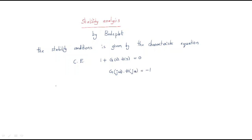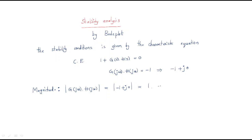From this we get the magnitude by applying modulus: the magnitude of G(jω)H(jω) equals the modulus of minus 1. We can write minus 1 as minus 1 plus j0 on the real-imaginary plane. Applying modulus to minus 1 plus j0 gives magnitude 1 in linear scale. In dB, 20 log(1) equals 0 dB.